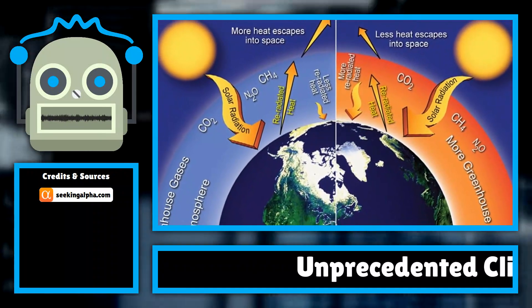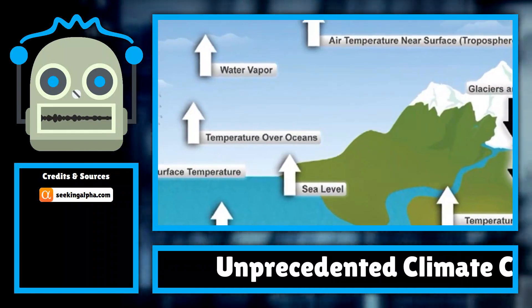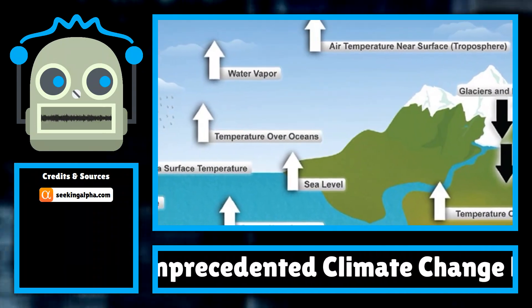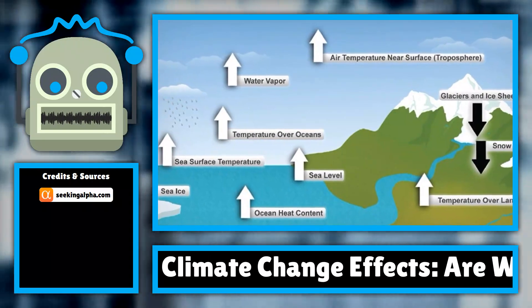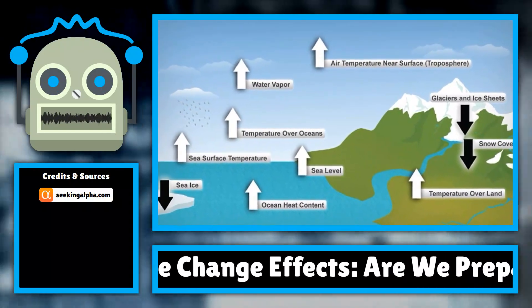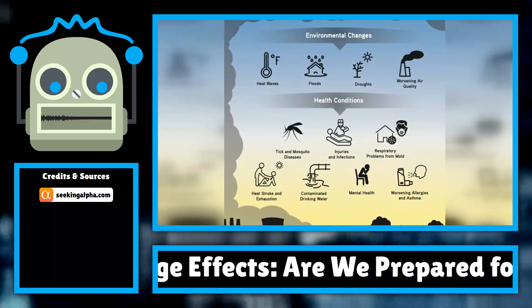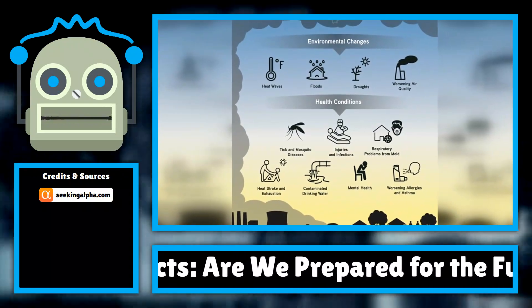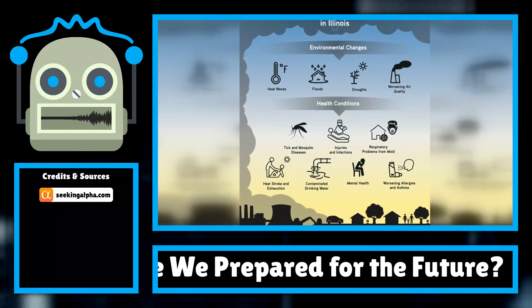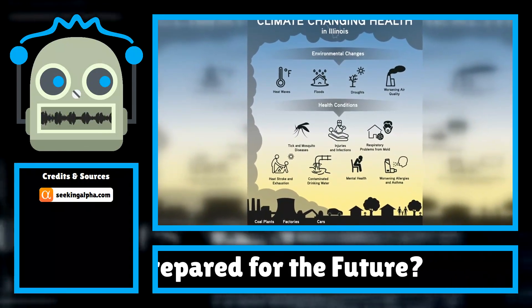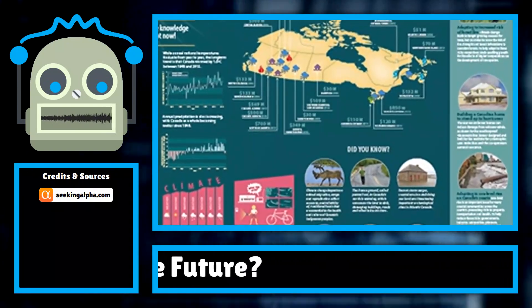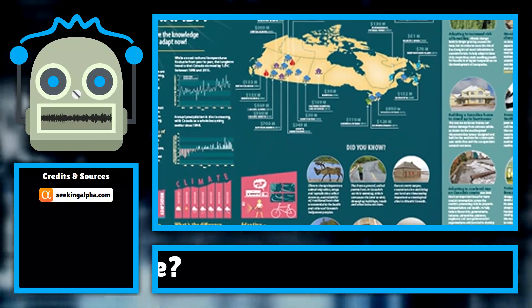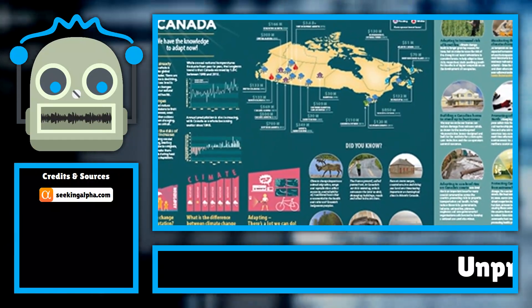In response to the growing crisis, many countries are setting ambitious climate goals. The Paris Agreement, adopted in 2015, aims to limit global warming to well below 2 degrees Celsius above pre-industrial levels. However, progress has been slow, and many nations are falling short of their commitments. The recent COP26 summit in Glasgow highlighted the need for stronger action, with world leaders pledging to phase out coal and reduce methane emissions.